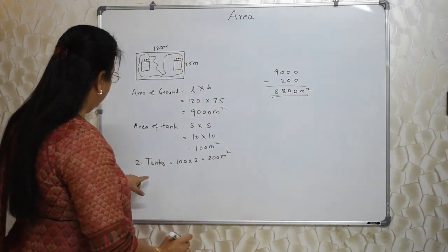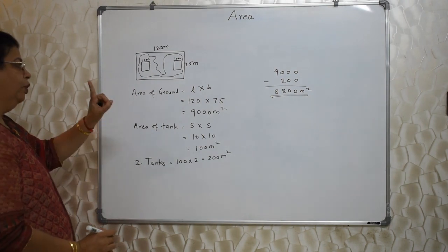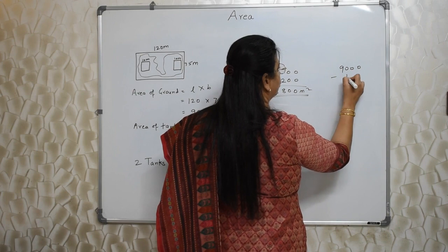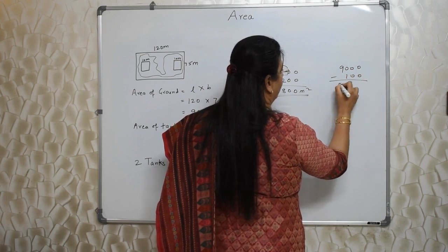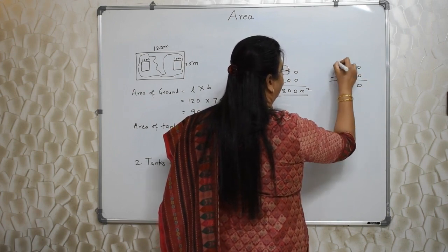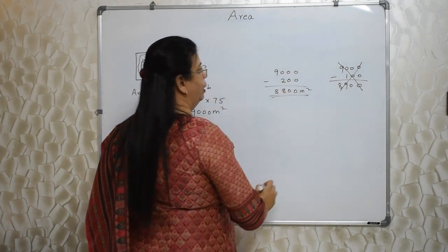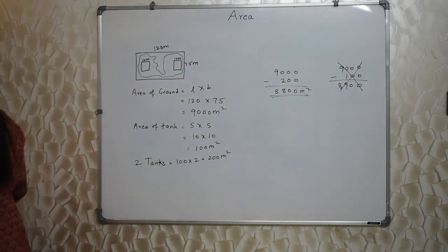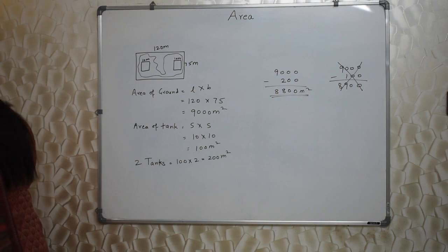If you ignore those two tanks and if you take only one tank, your answer would have been 9000 minus only one tank, that is 100, that is 8900. And for sure, this option will be there as one of the options. Don't take that. Let's move ahead. Next sum will appear on your screen.